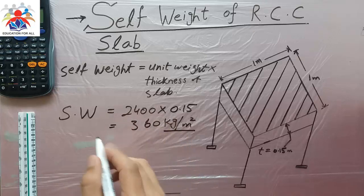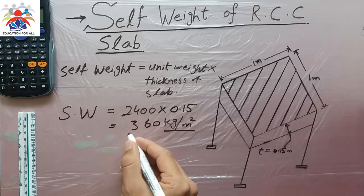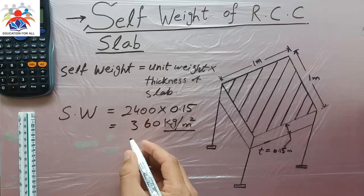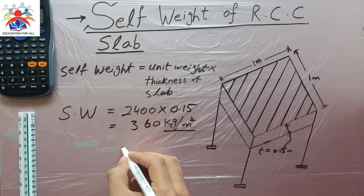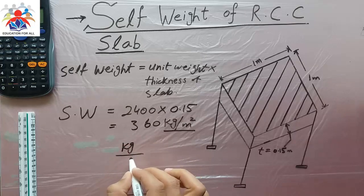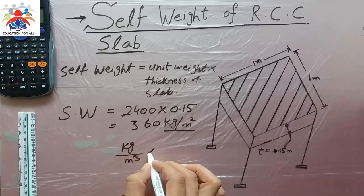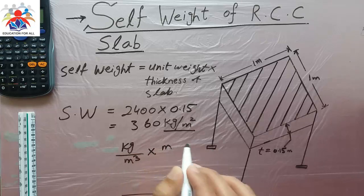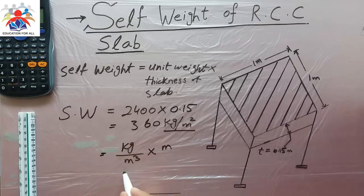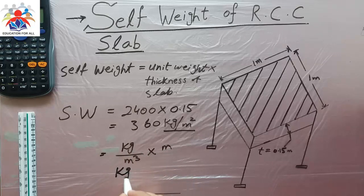2400 is the unit weight, which is in kilograms per cubic meter, multiplied by meter. So what we get is: kg/m³ multiplied by m equals kg/m². This gives us kilograms per square meter.